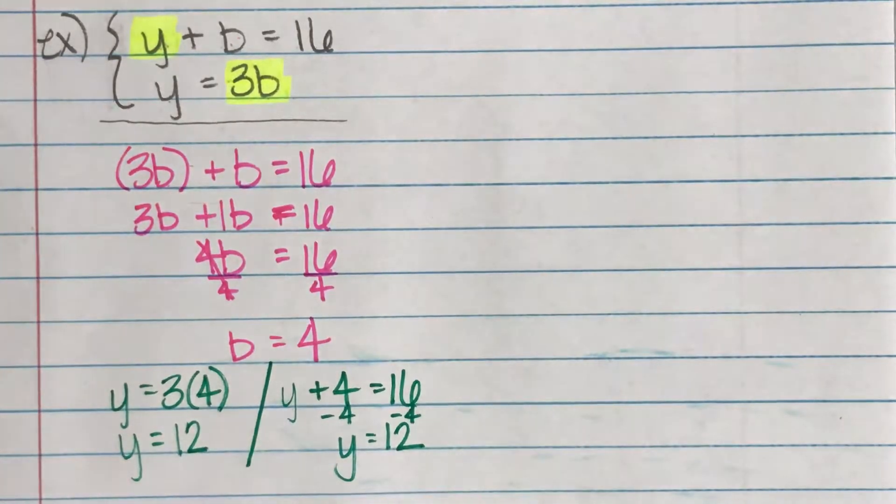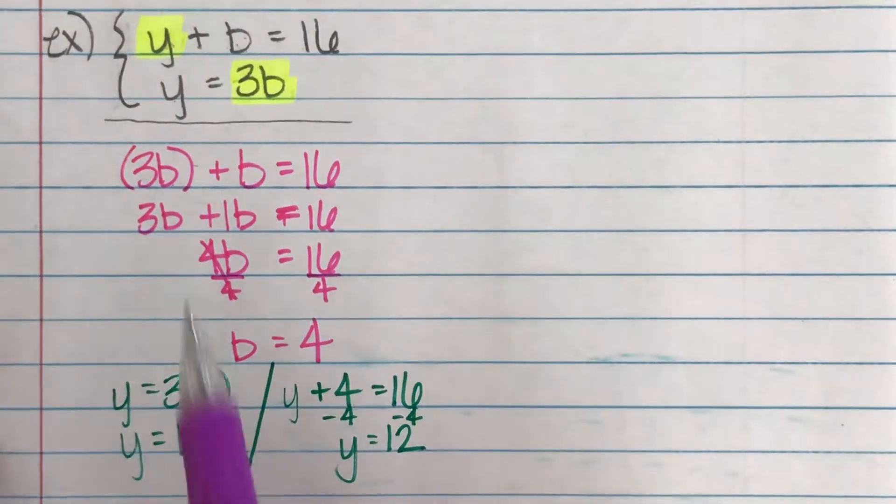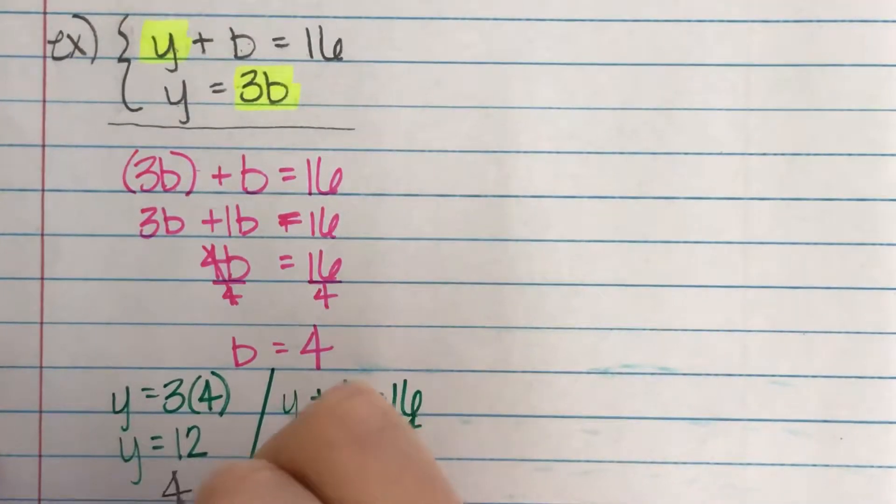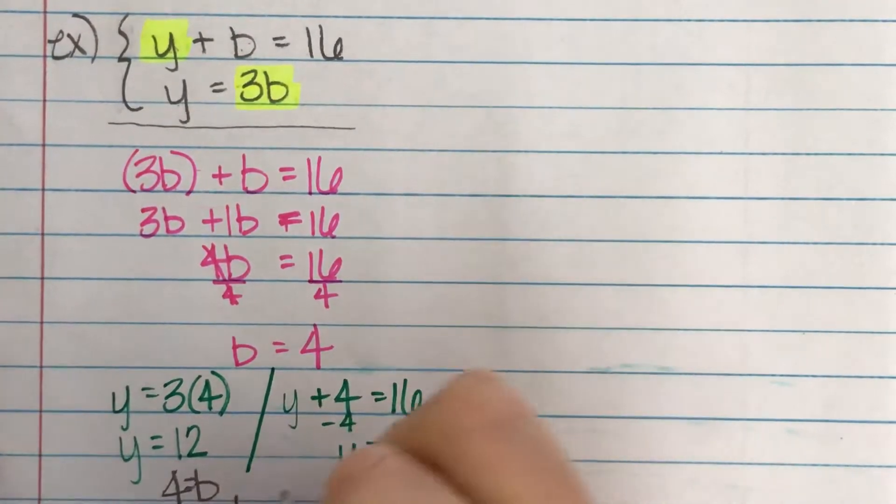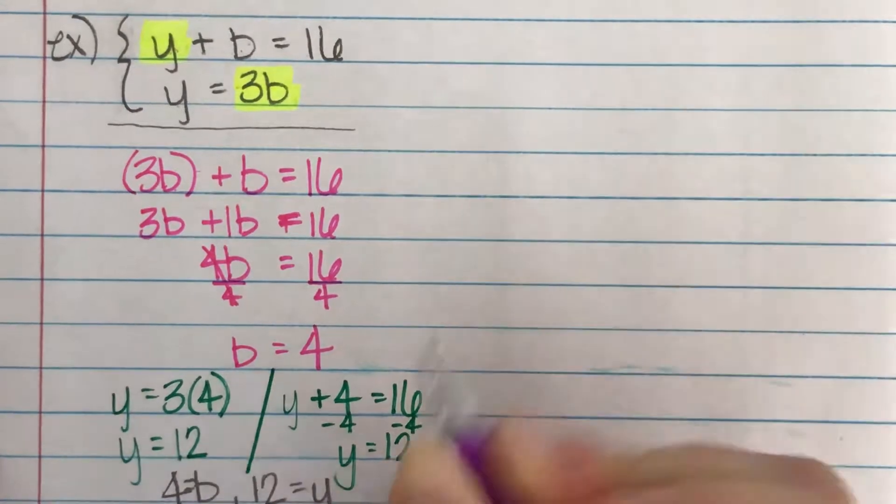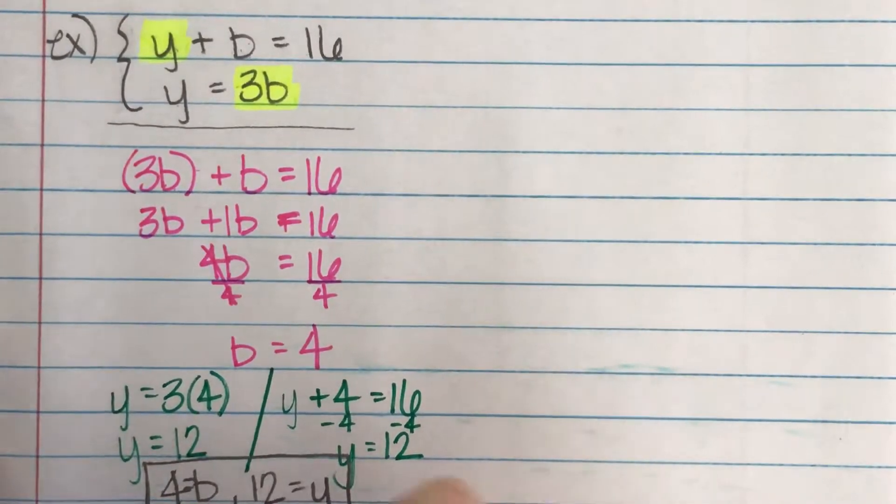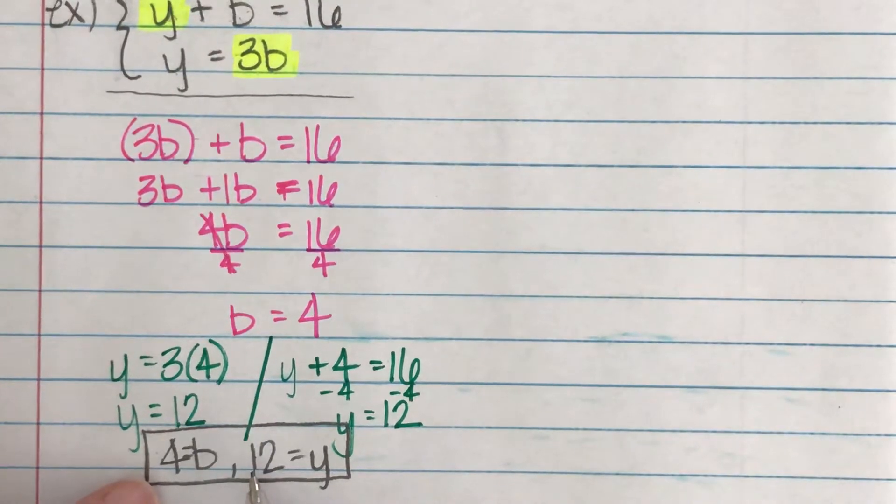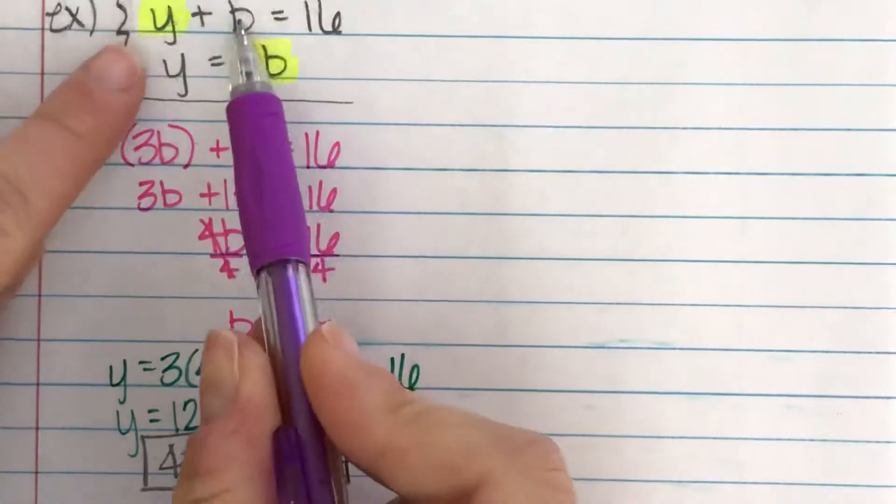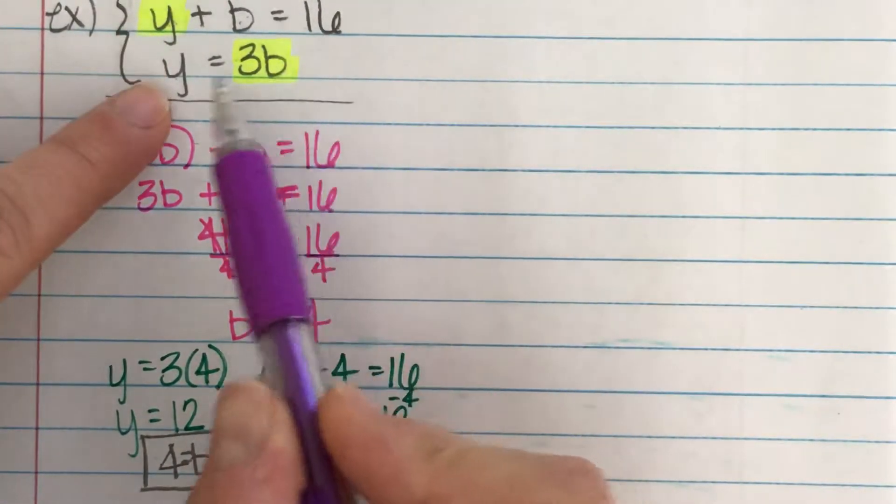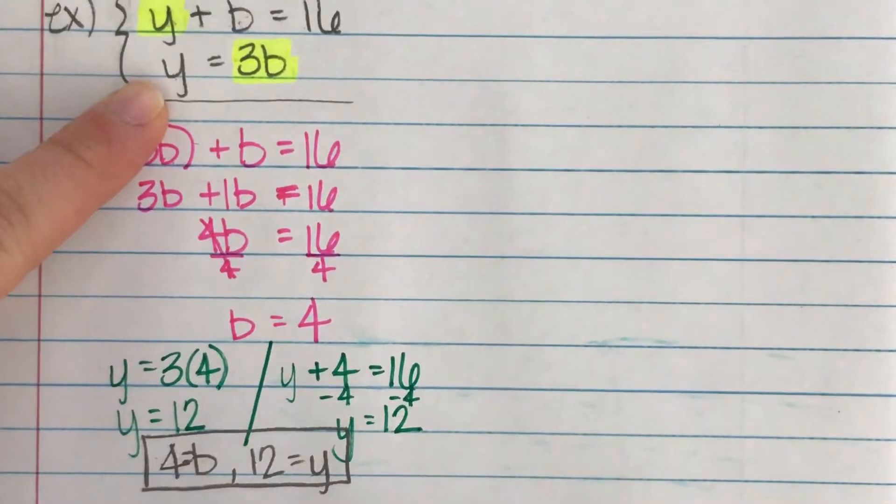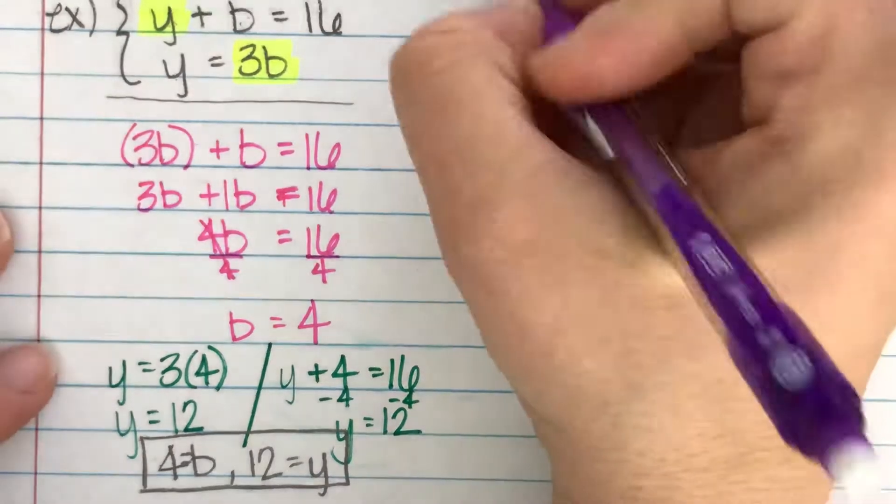So your final answer is always two parts because I had two values I didn't know in the beginning. So my answer is that there are four blue and 12 yellow. So that's the actual answer that we're finding. That's the only combination that when I add them together, I get 16, but the y value is three times the b value.